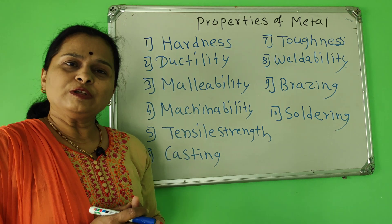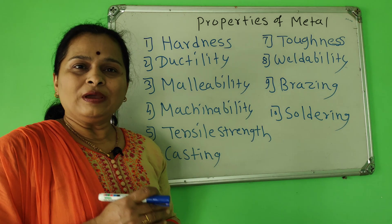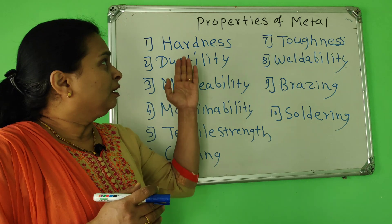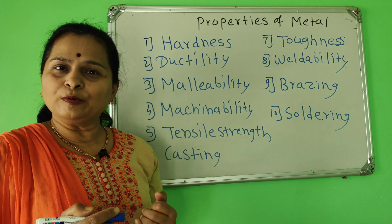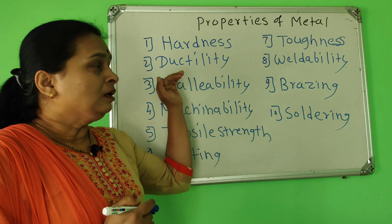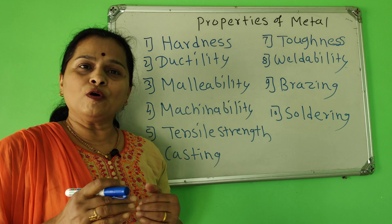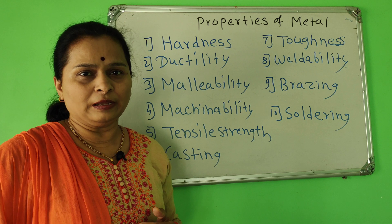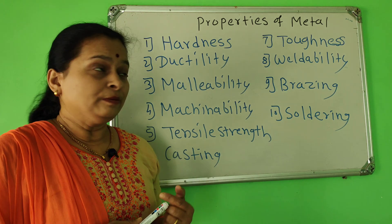Hardness is the ability of metal to resist wear and penetration. For example, tungsten is the hardest metal and potassium is the softest metal. Then ductility is the ability of metal to be drawn into thin wires without breaking — like gold, silver, copper, aluminium.